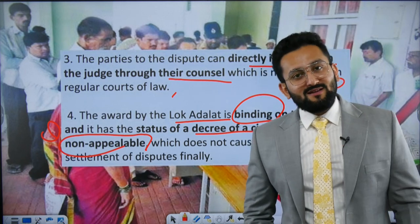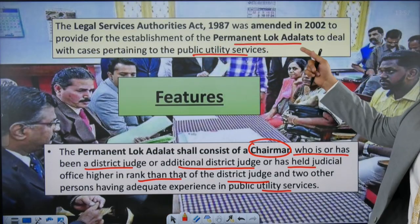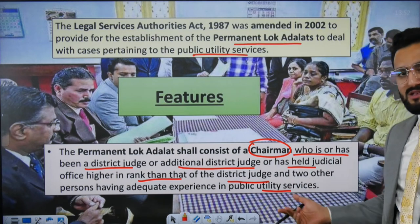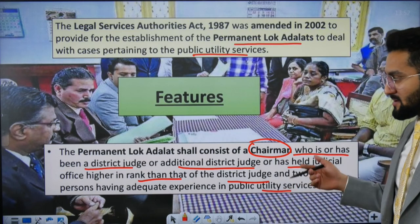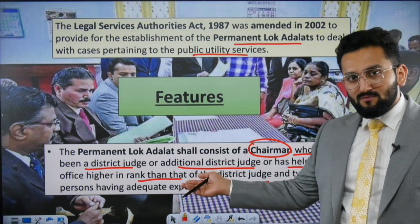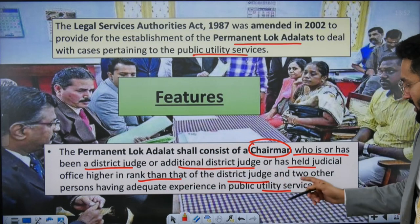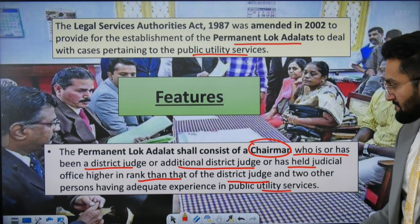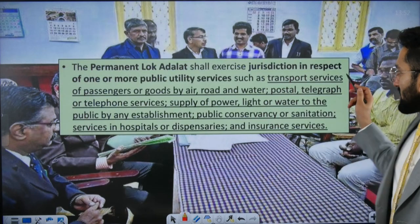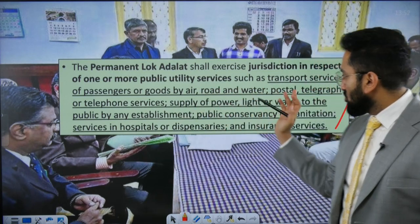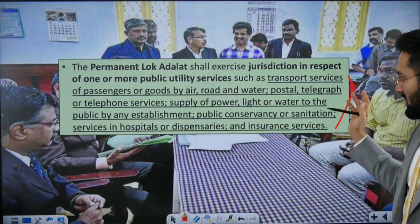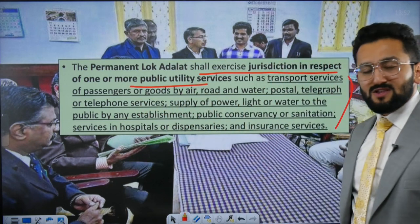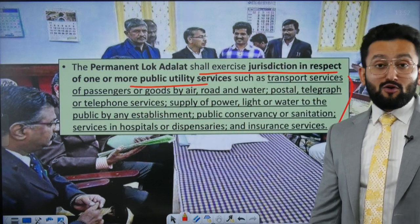The Legal Services Authorities Act, 1987 also talks about having a Permanent Lok Adalat for cases related to public utilities. For that there can be a permanent Lok Adalat; the chairman would be a district judge, additional district judge, or any judicial officer of higher rank. Public utilities include: transport services (air, road, water), postal/telegraph/telephone services, and supply of power, light, and water.